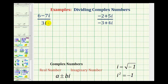So when the denominator is just an imaginary number, we can eliminate the i from the denominator by using the fact that i squared is equal to negative one. Notice, if we multiply by i over i, the denominator would be three i squared, and then we can substitute negative one for i squared, which would simplify it to negative three.